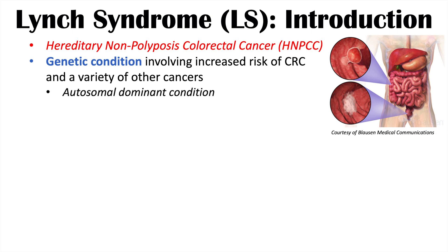This is an autosomal dominant condition, which means that you only need one copy of an affected allele — a version of a gene — to express or have this condition. That also means that if an individual has it, they have a 50% chance that their children will also have it.